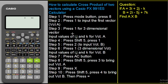In this video I'll be showing you how to calculate the cross product of two vectors using a Casio FX991ES calculator. The whole process is actually divided into three steps: first you need to ensure that your calculator is in vector mode, secondly you need to input the dimensions of the vectors you're talking about, and thirdly you calculate the cross product.